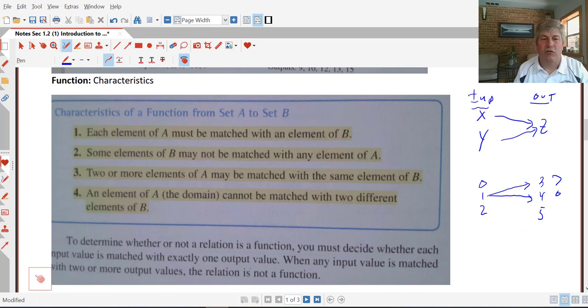So it says here, to determine whether or not a relation is a function, you must decide whether each input value is matched with exactly one output. When any input value is matched with two or more output values, the relation is not a function, which is what I've got there in that last example.